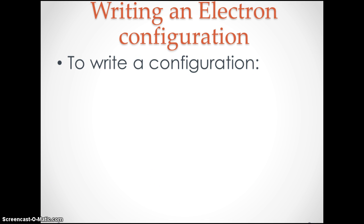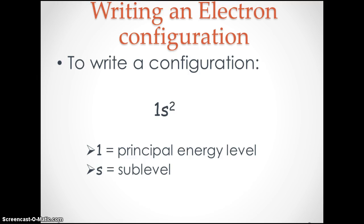To write a configuration, you're going to need three things. The first one is the principal energy level. In this case, it's one. So that tells us we're in the first principal energy level or the first ring. The second thing you'll need is the sublevel, your S, P, D, or F. In this case, it will be the S. And then the last thing you need is the number of electrons or the exponent. In this case, we have an exponent of two. So it tells us we have two electrons in the S sublevel, which is the first principal energy level.